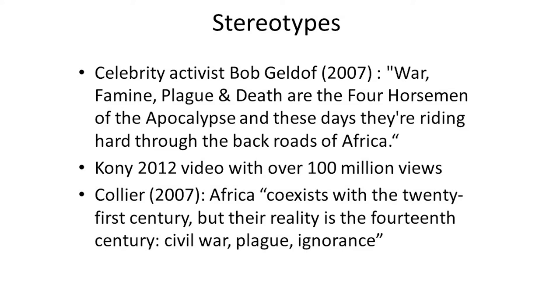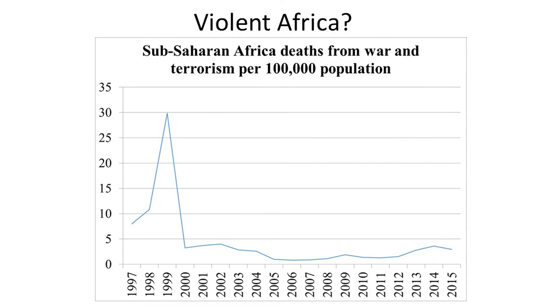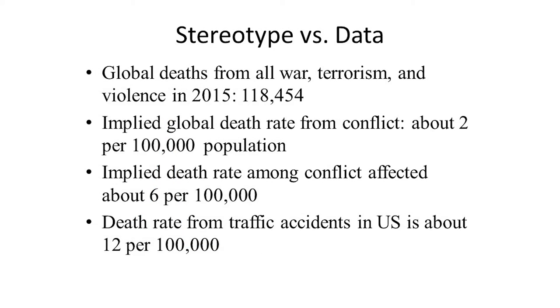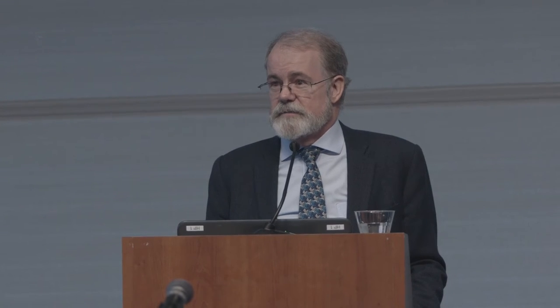What's the true picture of how violent Africa is? The number of war deaths from war and terrorism per 100,000 population reached a brief peak in 1999 when there were a couple of wars going on, and since then has hovered at a stable figure of around three deaths per 100,000 population. Deaths worldwide from all war, terrorism, and violence are a little over 100,000. The implied death rate even in the most conflict-afflicted areas is about six per 100,000. By comparison, the death rate from just driving around New York City is more than twice the probability of dying in a war in a conflict area.